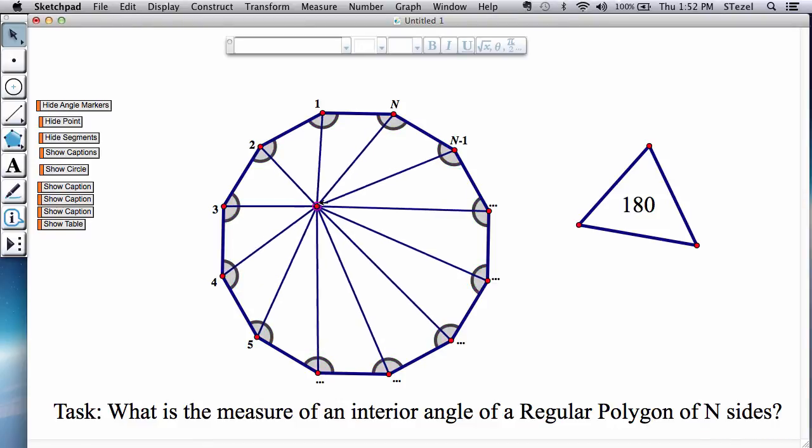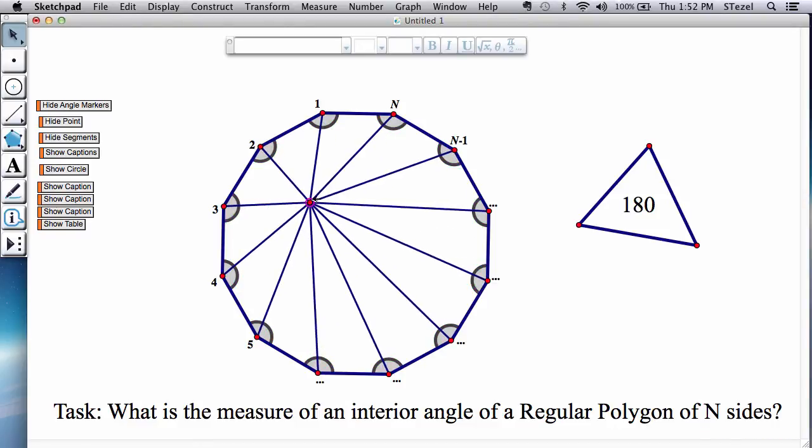So the way we're going to do that is by this process of triangulation and by using this simple fact from elementary geometry. So what we do is we notice that if I ask you what is the angle sum in this triangle, you would tell me it is 180.